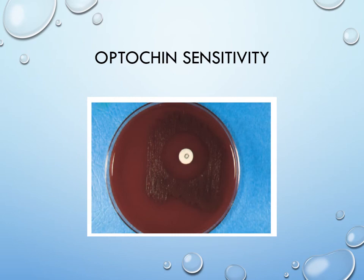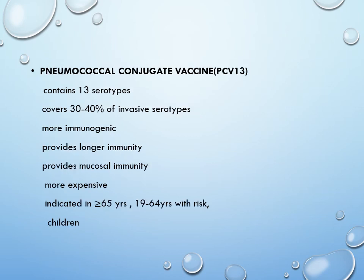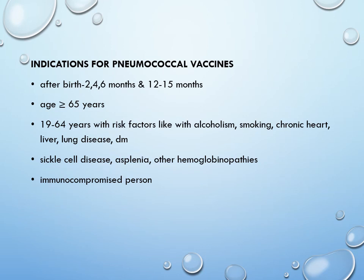Optochin sensitivity shows a zone of inhibition on the blood agar plate, confirming it is S. pneumoniae. Regarding vaccines, there are two types: the 23-valent pneumococcal polysaccharide vaccine and the 13-valent conjugate vaccine (PCV13). A separate video covers which age group or patient type is recommended for each vaccine, their benefits and disadvantages. Vaccine indications include all those at risk — asplenia, chronic disorders, and children less than 2 years.